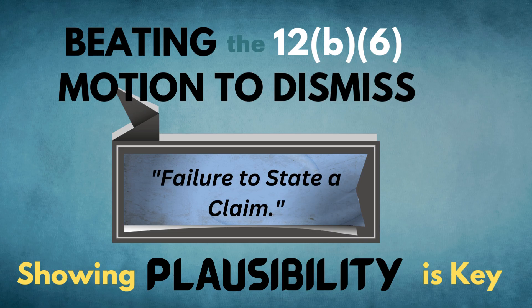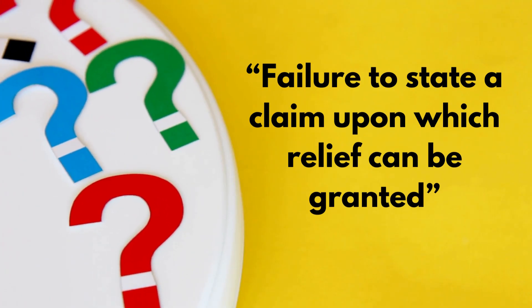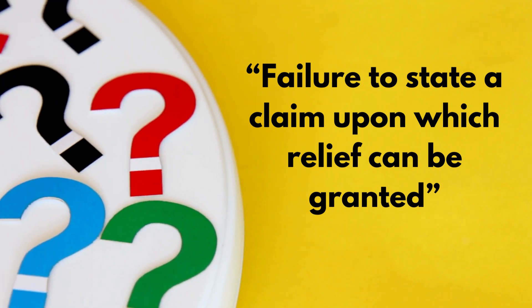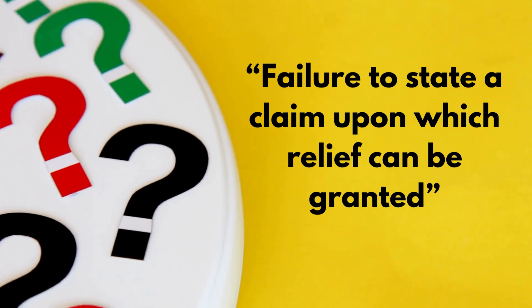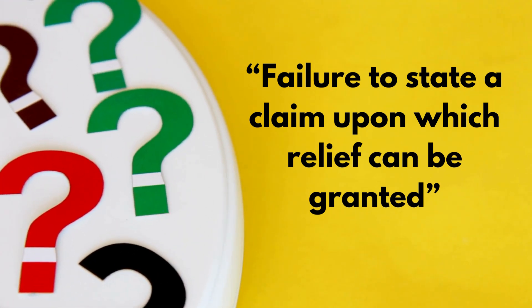Failure to state a claim. The key to beating the 12B-6 is showing plausibility — and that's what we're going to focus on today. With the 12B-6 motion to dismiss, the defendant is contending that the plaintiff has failed to state a claim upon which relief can be granted.